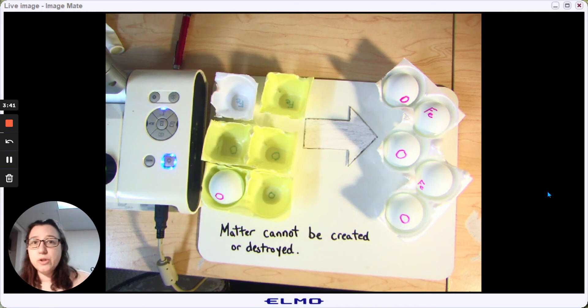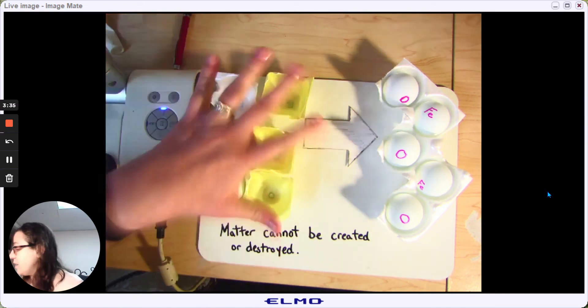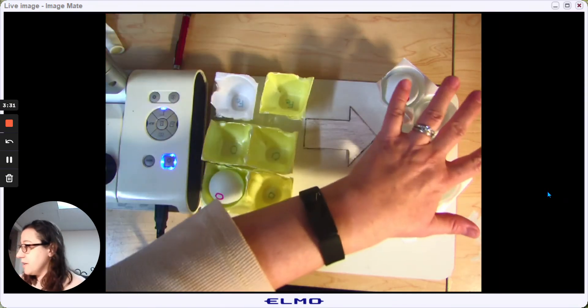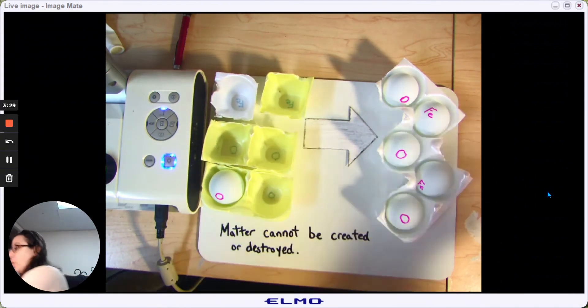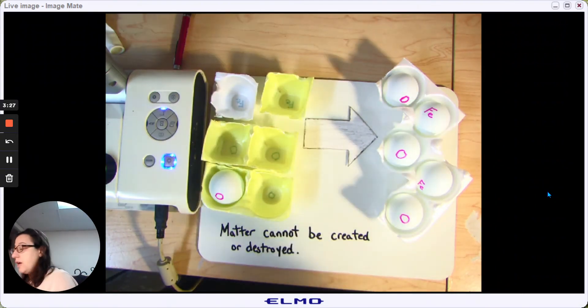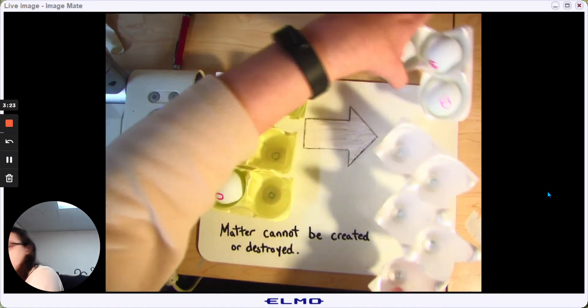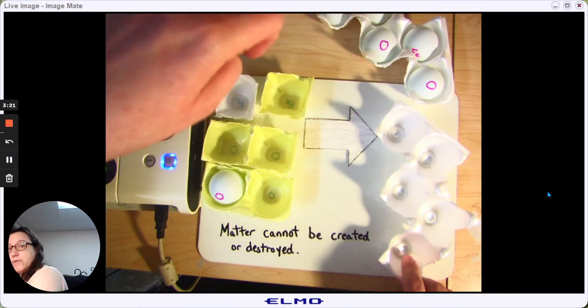And when we're writing a chemical equation, we want to make it balanced. A balanced chemical equation has the same number of atoms of each type on this side as it has on this side. So we're going to bring in another rust molecule and add it over to this side.